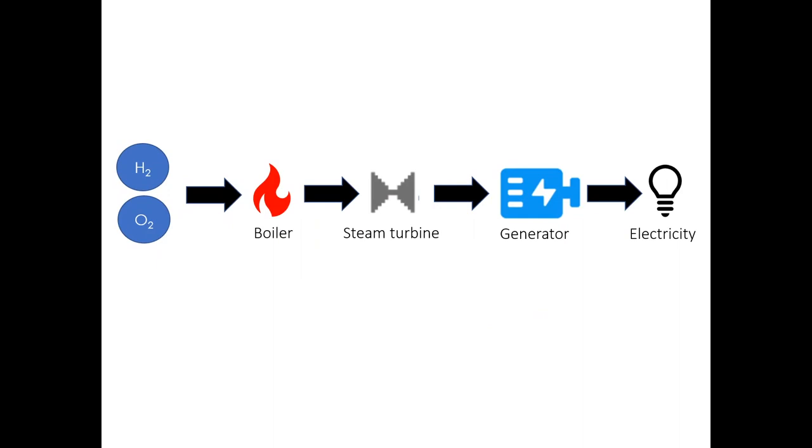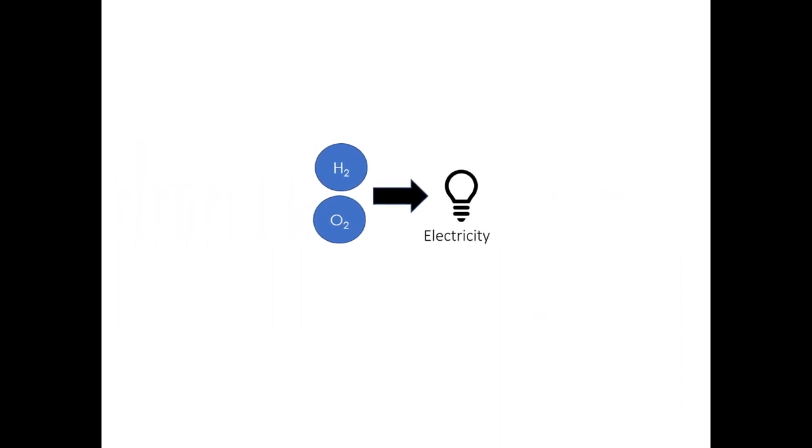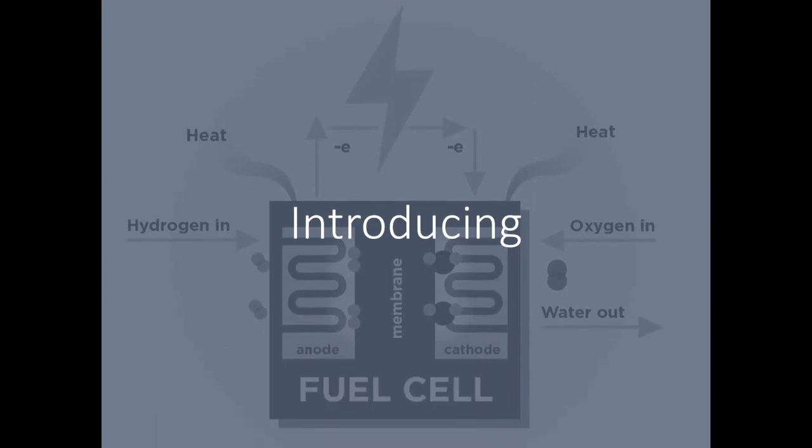When we just burn hydrogen with oxygen to make electricity, there's a lot of steps in between. This makes the process inefficient. What if we could just skip the middle steps? This brings us to fuel cells.